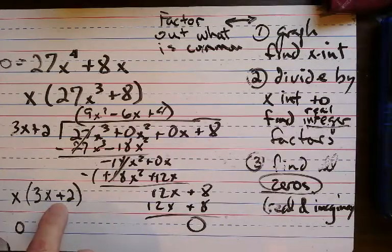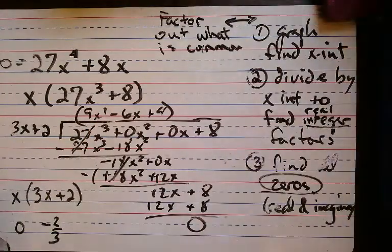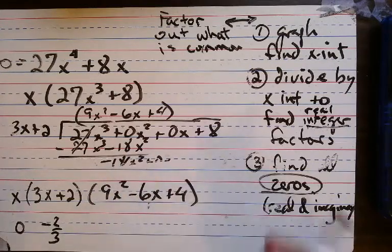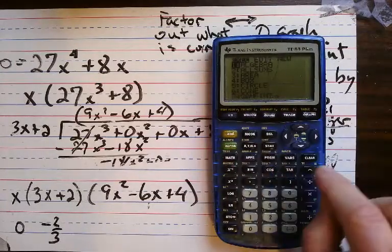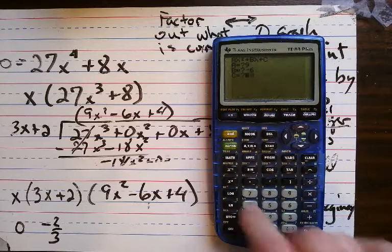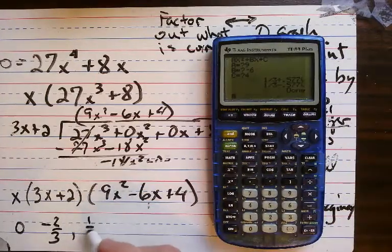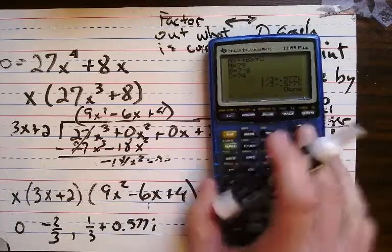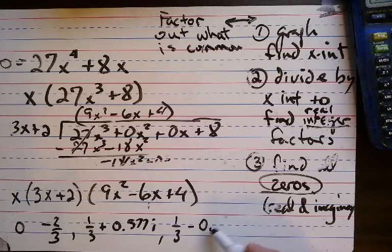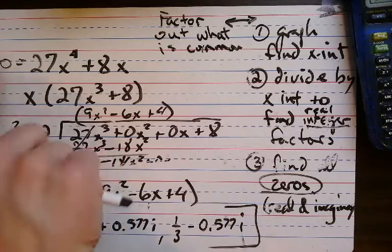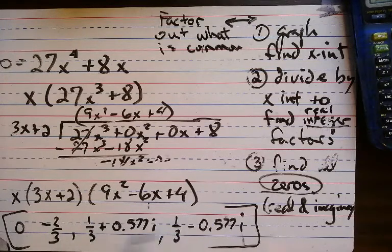So here's the first factor, here's another factor, here's the last factor. I stop when I get a quadratic. So I write it: 9x squared minus 6x plus 4. Now I've got to go to the quadratic formula. Typing in 9x squared minus 6x plus 4 — I get 1/3 plus 0.577i and 1/3 minus 0.577i. I found four answers — there's supposed to be four: 0, negative two-thirds, and then two imaginary ones. Two real, two imaginary. We did it.